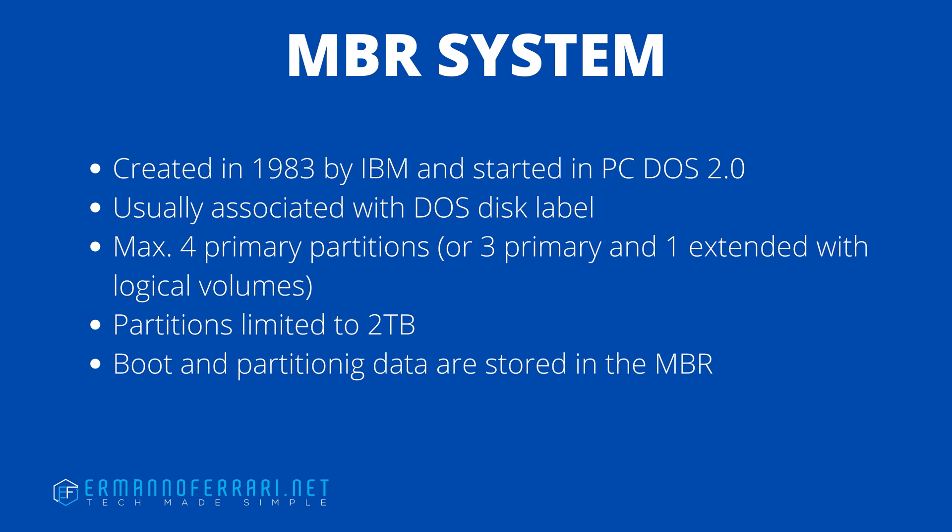Before we get our hands dirty on the terminal, let's have a short overview about the various systems. The MBR system came out around 1980 and started in PC-DOS 2.0 by IBM. It is usually associated with the DOS label. It can have a maximum of four primary partitions, or three primary and one extended with logical volumes. Partitions are limited to two terabytes.